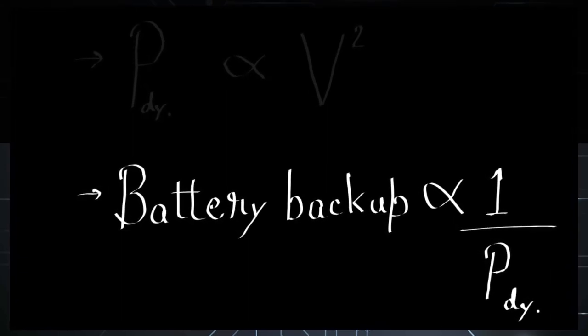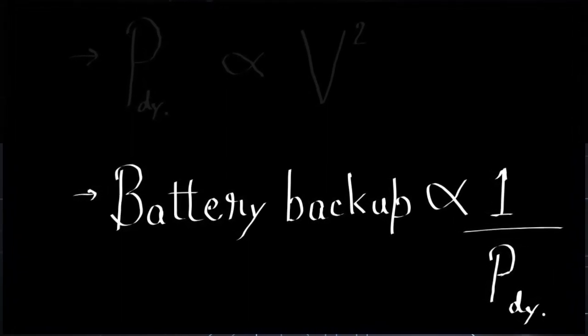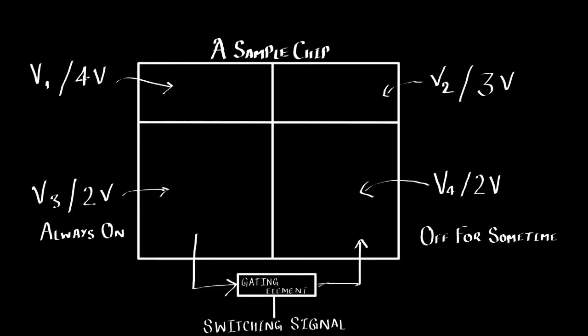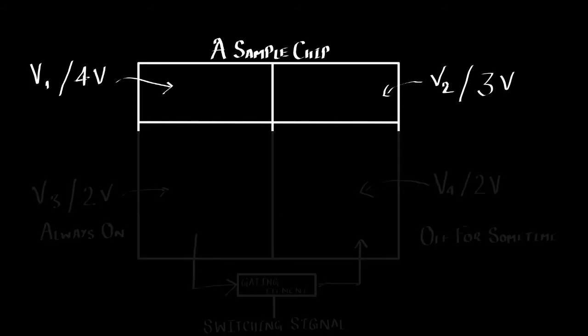Now let's try to understand the two popular ways of having multi-voltage design. Suppose we have a chip which has four compartments each having its own supply V1, V2, V3 and V4. Considering only V1 and V2, we see that there is a voltage level difference.